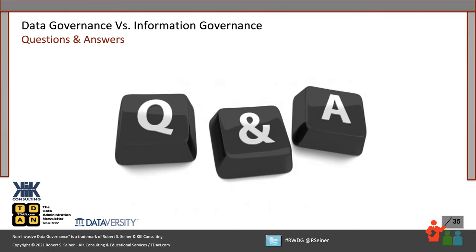Our conference in December is Data Governance and Information Quality — so you can add the Q on there. There's a comment about a possible fourth category: analyze data. Well, that's a use of data. I'm going to reject that as being a fourth category, though analyzing data and reporting on data falls under data use. As for IoT governance — if you follow what I talked about today, IoT governance would be the governance of processes associated with IoT. IoT data governance would be the governance of IoT data specifically. Machine learning data governance, AI data governance — those are the uses of the data. I personally wouldn't call it IoT data governance.